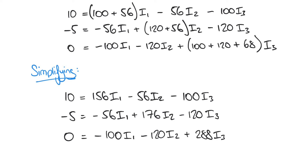A few points to consider when constructing these equations. If a loop or pane doesn't contain a voltage source, then it's equal to zero, like this third equation here. It's important to keep the terms in order: I1, I2, and I3. You can see we've been consistent with that, and this is going to be particularly useful if we use matrices to solve this system of equations.